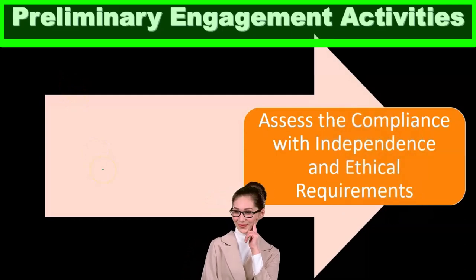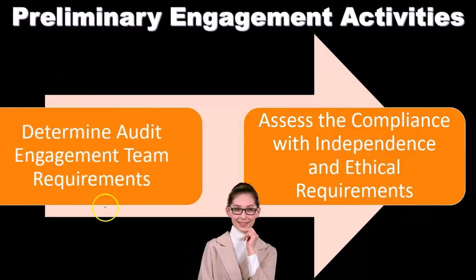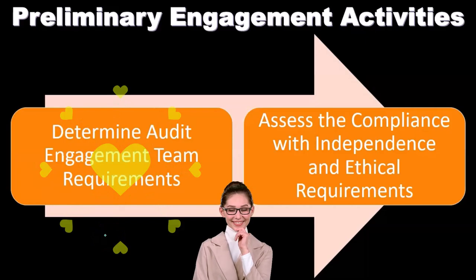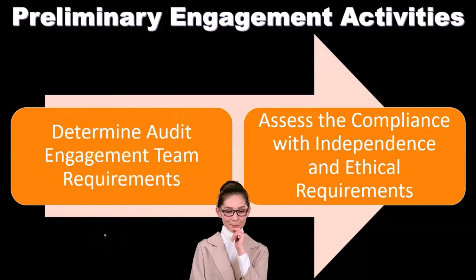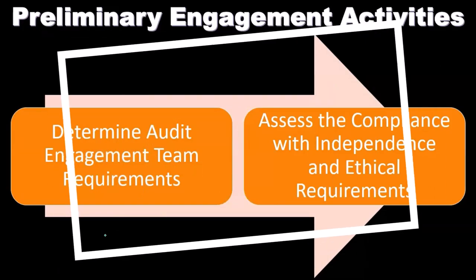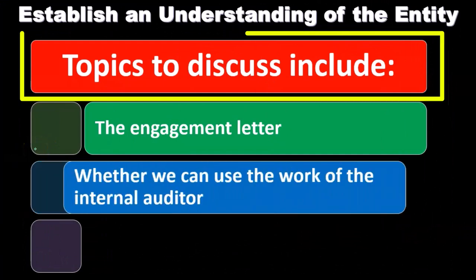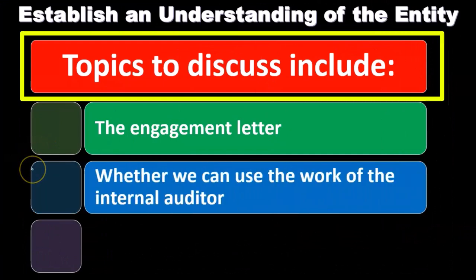The preliminary engagement activities include: assess the compliance with independence and ethical requirements, and determine audit engagement team requirements — thinking about what are the routine requirements that we are going to need for the engagement.